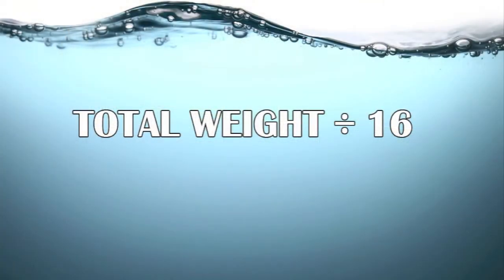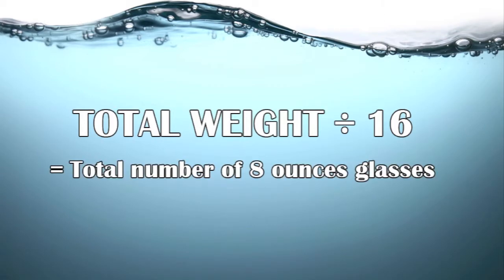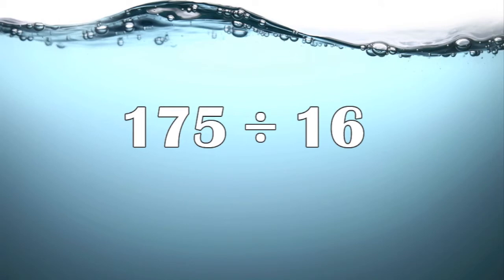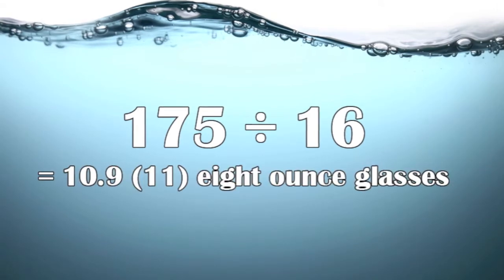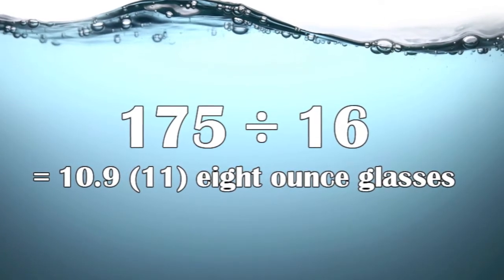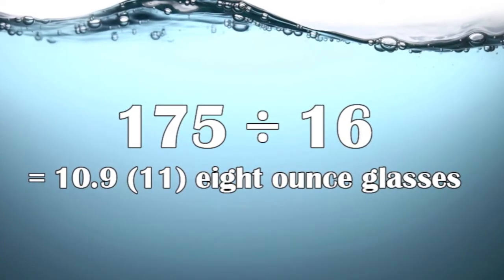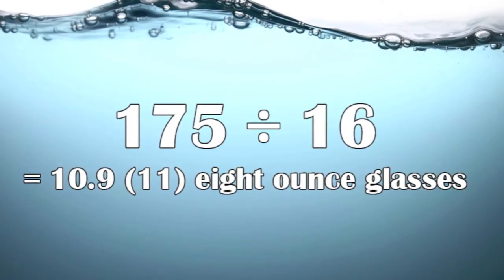Take your total weight in pounds and divide it by 16. This will give you the total number of 8 ounce glasses that you should be drinking per day. For example, if you weigh 175 pounds and divide that by 16, you will come up with the number 10.9. Round this up to 11 and that's the total number of 8 ounce glasses you should be drinking daily.